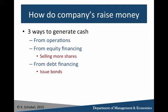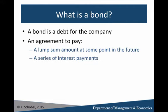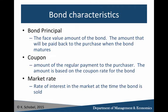We issue bonds so that someone will give us money, and in return they'll receive back some coupon payments and a lump sum in the future. A bond is a debt for the company — it's their agreement to pay the purchaser a lump sum at some point in the future, and also to pay a series of payments at intervals in the future.